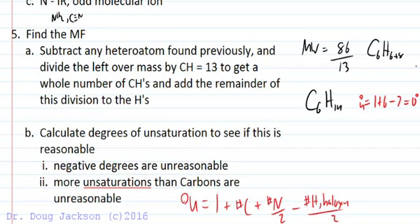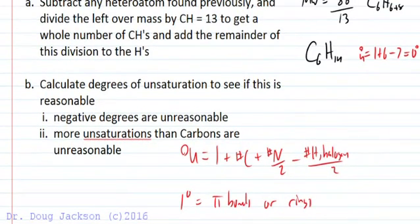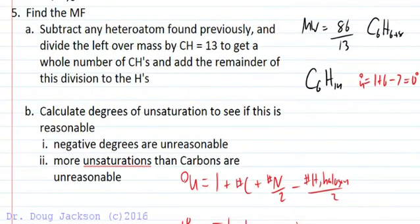That's reasonable. If we were negative degrees of unsaturation, that would be unreasonable. If we had more unsaturations than we had carbons, that would be very unreasonable because degrees of unsaturation are pi bonds or rings. So very difficult to have more pi bonds than we have carbons in a molecule overall. So we have no degrees of unsaturation according to the calculation if it is a hydrocarbon.